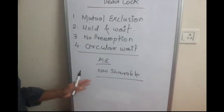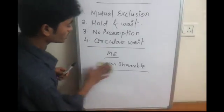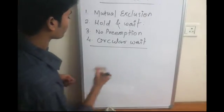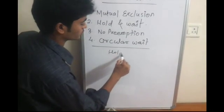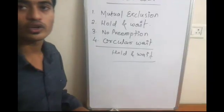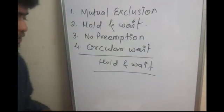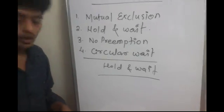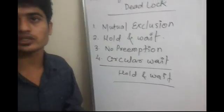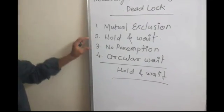Then what is hold and wait? A process must be holding at least one resource and waiting for another resource which is held by some other process which is stopped due to unavailability of resources. That is hold and wait.